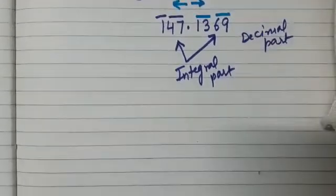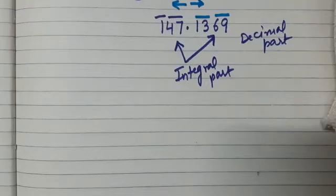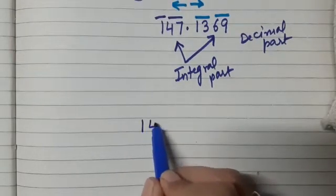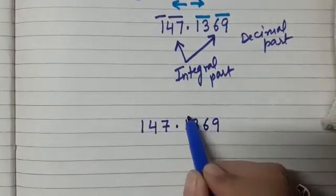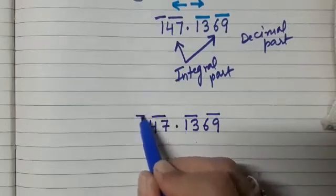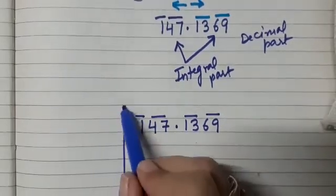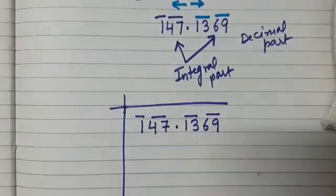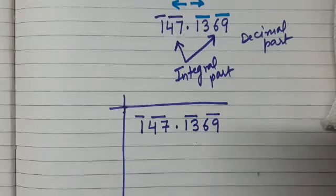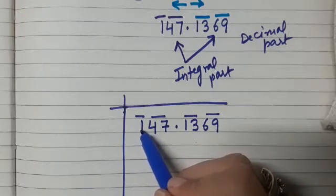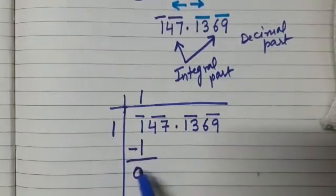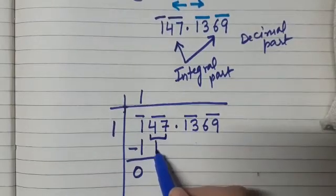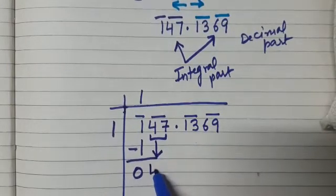Next step is we are going to start the process of division. So we write the number 147.1369. This is how we have marked the periods and then we put the division sign. So you start the way you used to do earlier. Here we have from the left side 1. So we write 1, 1s are 1 and then subtract. You get 0.